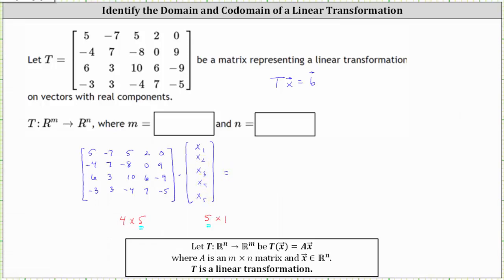And we also know the product will be a four by one matrix, which represents a vector in R^4 with four components. If the image is vector B or the product is vector B, the components would be B sub one through B sub four. Because the input vector has five components and the output vector has four components,